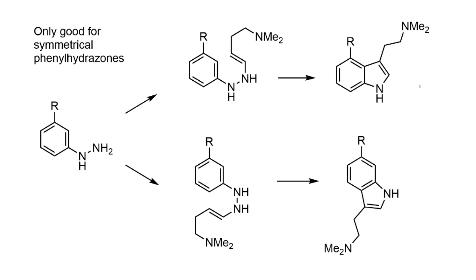Unfortunately, the Fischer indole synthesis isn't well suited for 4-substituted tryptamines, due to symmetry considerations. The starting phenylhydrazine would need a substituent at the relevant position, but there's no preference for which way the enamine sits before the electrocyclic step. Following either pathway through gives either a 4- or a 6-substituted tryptamine, and it's hard to imagine a scenario where the R group exerts significant influence over which cyclization is favored.